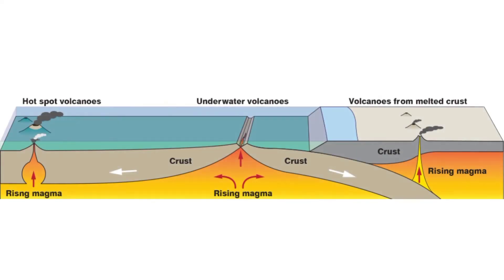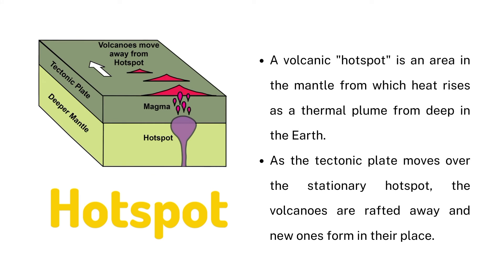So, how are volcanoes formed? Magma can rise when pieces of Earth's crust called tectonic plates slowly move away from each other. Magma also rises when these tectonic plates move toward each other. A final way that magma rises is over hot spots. A volcanic hot spot is an area in the mantle from which heat rises as a thermal plume from deep in the Earth. High heat and lower pressure at the base of the tectonic plates facilitates melting of the rock. This melted material, called magma, rises through cracks and erupts to form volcanoes. As the tectonic plate moves over the stationary hot spot, the volcanoes are rafted away and new ones form in their place, resulting in chains of volcanoes such as the Hawaiian Islands.